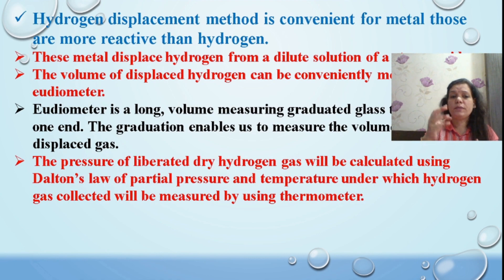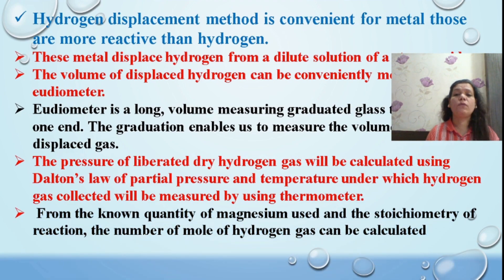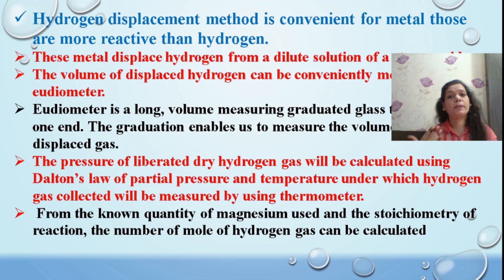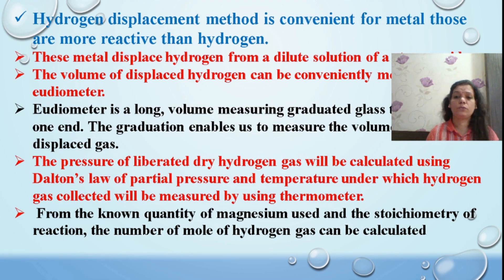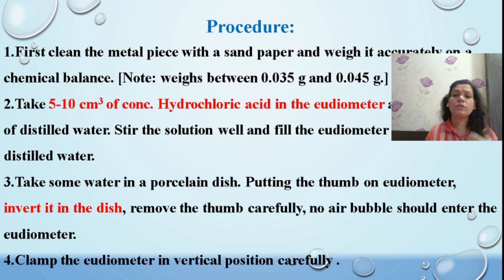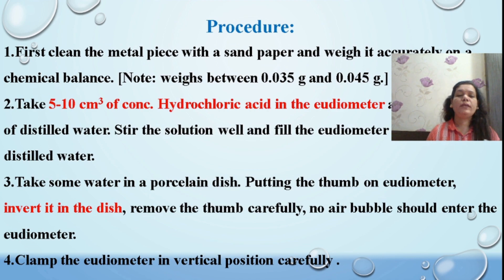If we know the quantity of metal taken initially, we can relate it stoichiometrically to the number of moles of hydrogen released. This allows us to find out the volume of gas released. In this experiment, we take a magnesium metal wire.